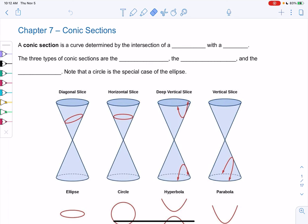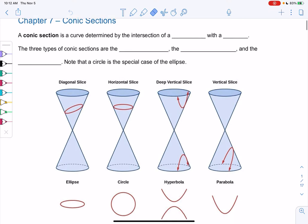Chapter 7, conic sections. A conic section is a curve determined by the intersection of a plane with a cone.